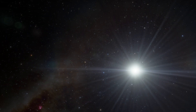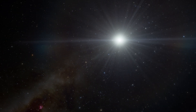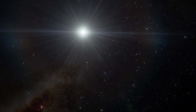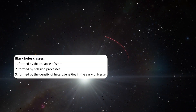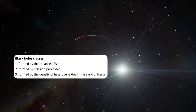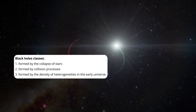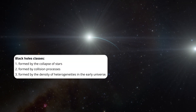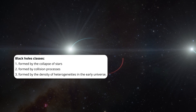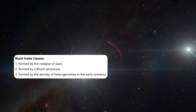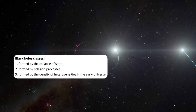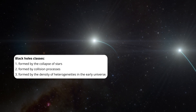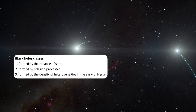Black holes occur through a variety of processes, which can be classified into three classes: black holes formed by the collapse of stars, black holes formed by collision processes, and black holes formed by density heterogeneities in the early universe.